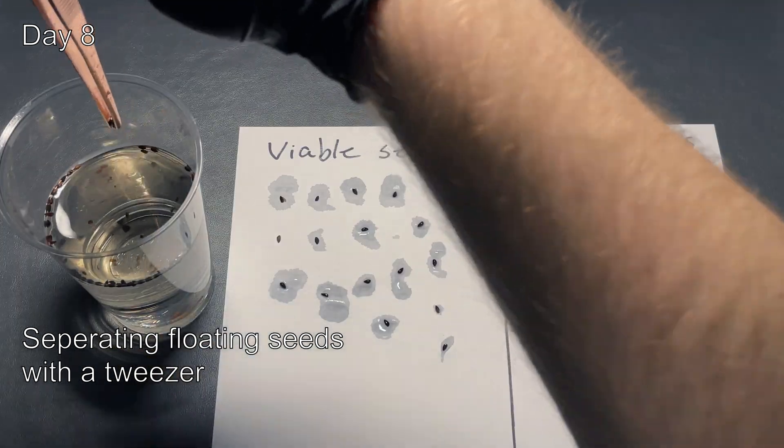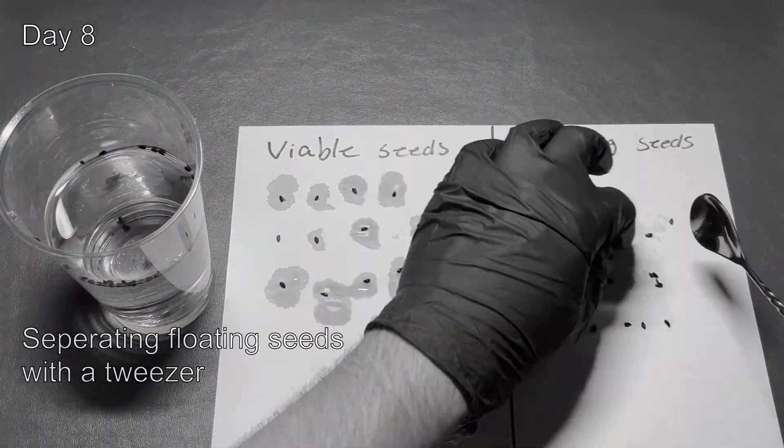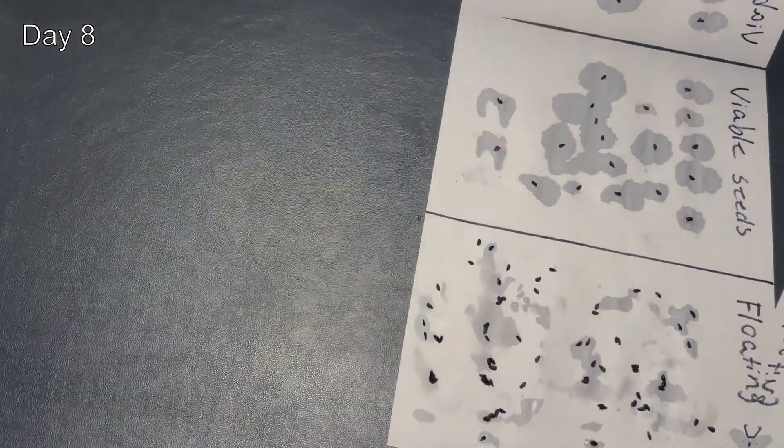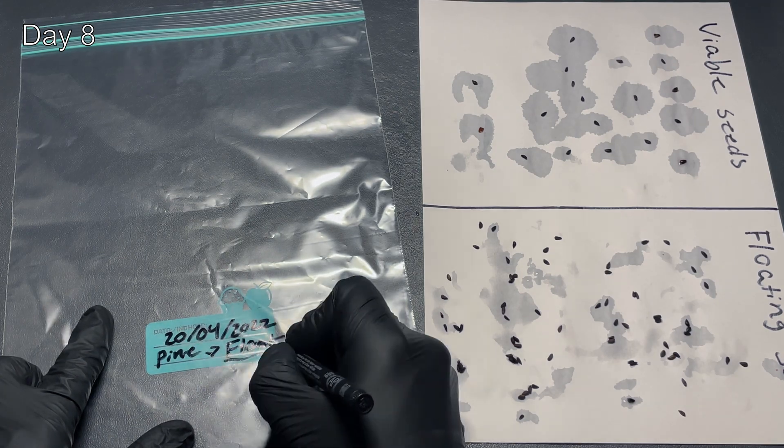Using this tool was totally the fastest way to take out the floating seeds. After taking out the floating seeds with the tweezers, we now put the seeds into a zip bag with potting mix.